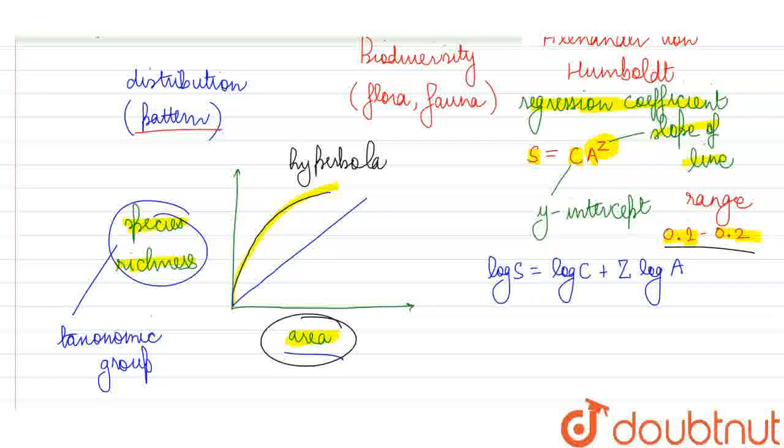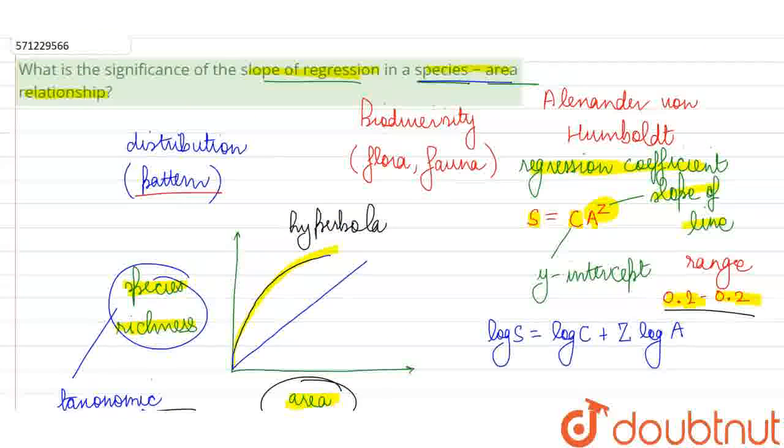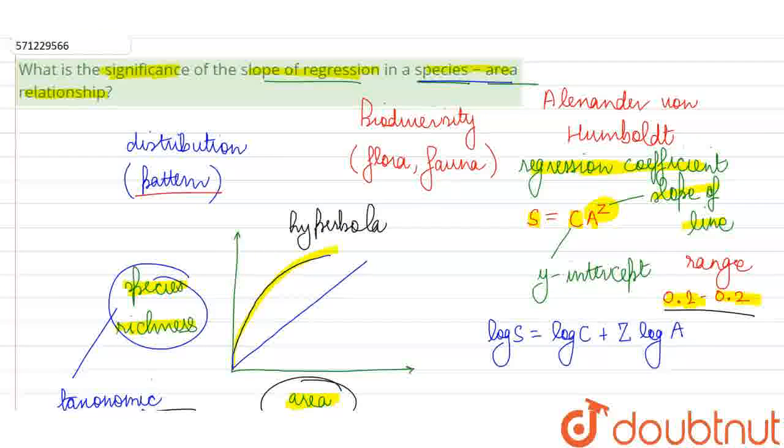Otherwise, whatever area we are considering and whatever taxonomic group we are considering, in a species area relationship, Z will remain in the range of 0.1 to 0.2. And that is the significance of this term in a species area relationship.